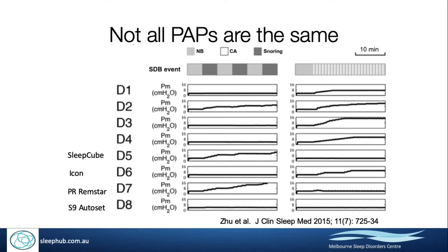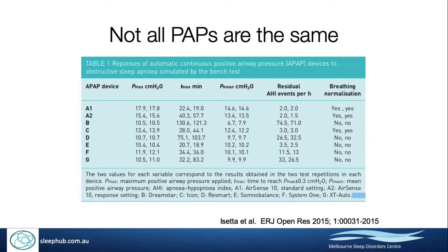From the same paper, this looks at the machine's ability to respond to snoring in the middle panel and to central apneas in the right-hand panel — again, a range of different results. The interesting finding is in the right-hand panel: what you want from a PAP device is for it to not increase pressure in response to central apneas. Yet the majority of devices actually did increase pressure in response to simulated central apneas, rather than recognizing them as central apneas and maintaining the same pressure.